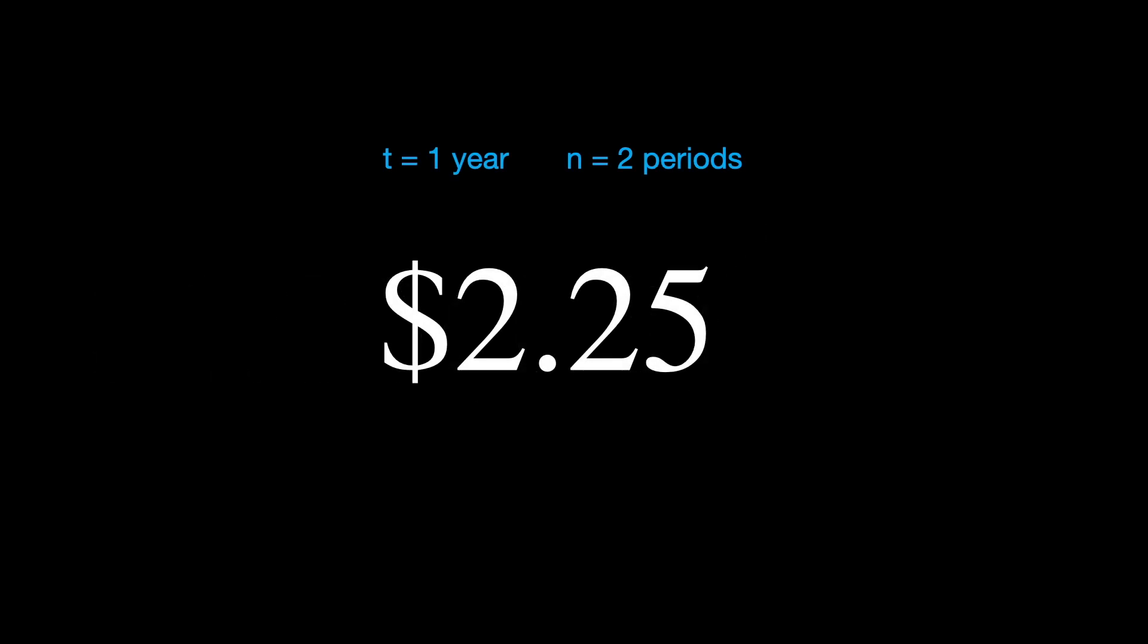But now you're free to reinvest that amount for another six months, giving another 50% increase. This leaves you with $2.25, or $1.5 squared, and at the end of the year, you've gamed the system, earning an extra $0.25.